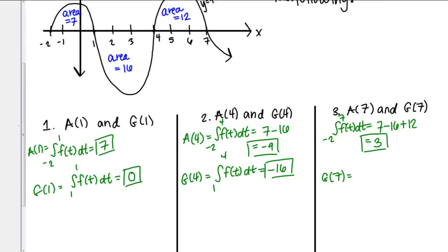Now I'm plugging in 7 to G of X, which is going to be the integral from 1 to 7 of F of T DT. It looks like I'm going to have negative 16 from that first region, and then plus 12, so negative 4 overall.